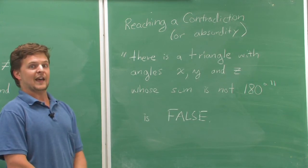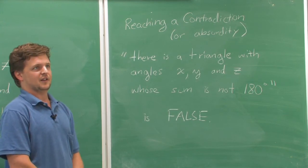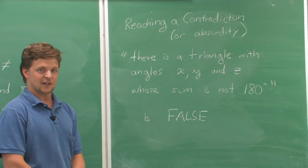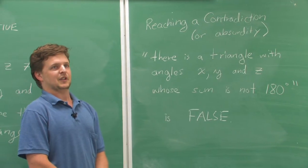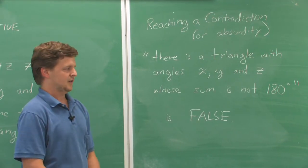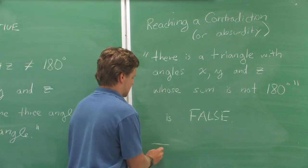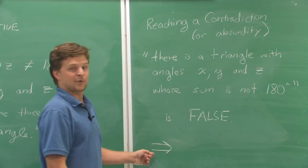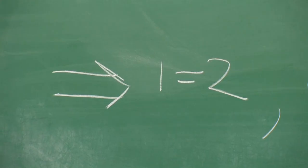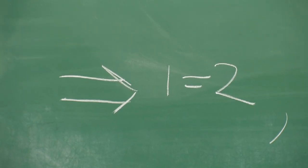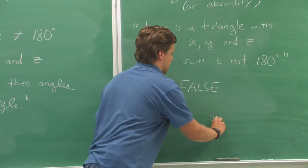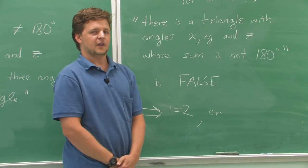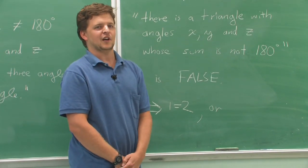I need to show that that is a false statement. I can do that by showing that assuming this statement implies something everyone agrees is false. Either it implies something like 1 equals 2 or that it implies two completely contradictory things.